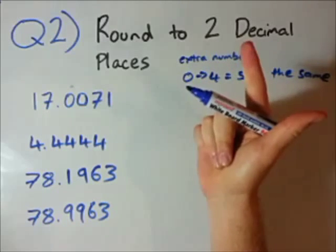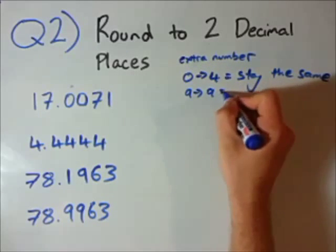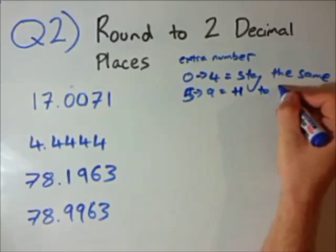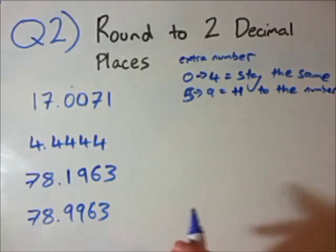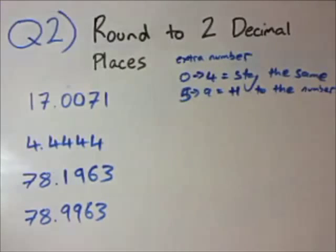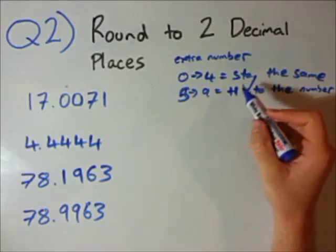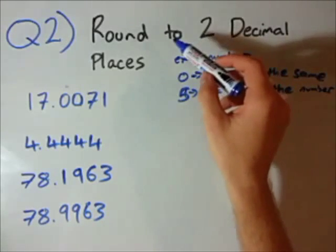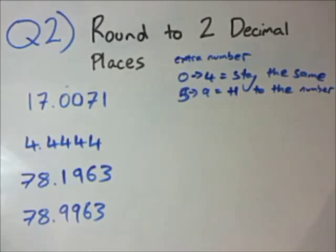If it is 5, 6, 7, 8, or 9, you add 1 to the number — meaning you round up by 1 to that last number. This might sound confusing, so I'll do some examples.